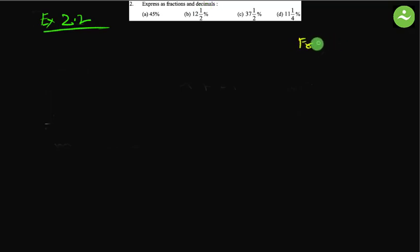Example of fraction: two by three. This is a fraction. And decimal fraction, an example: point five. This is a decimal fraction.